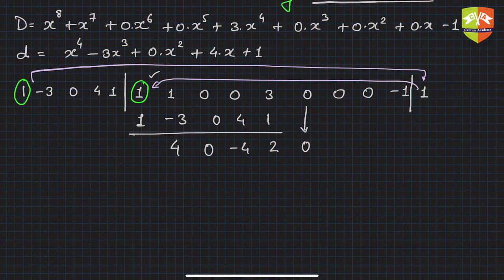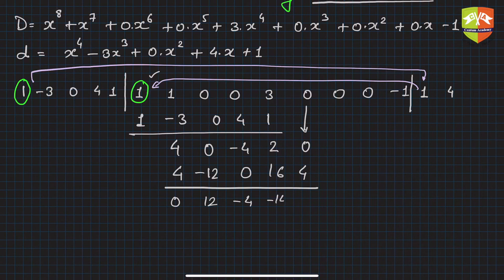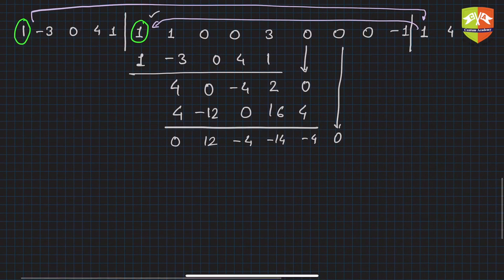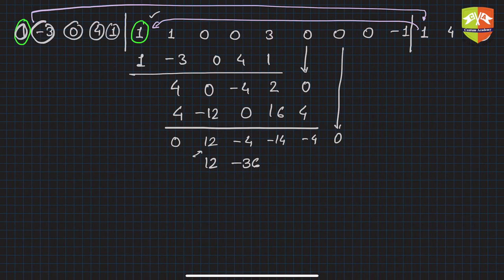The next quotient digit is 4. Multiply 4 by the divisor coefficients: 4, −12, 0, 16, 4. Subtract to get: 0, 12, −4, −14, −4. Bring down the next 0. The next quotient digit is 12. Multiply 12 by the divisor coefficients: 12, −36, 0, 48, 12. So 12 times 1 is 12, 12 times −3 is −36, 12 times 0 is 0, 12 times 4 is 48, and 12 times 1 is 12.